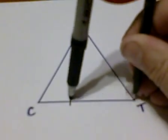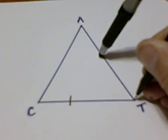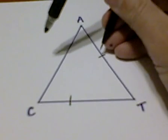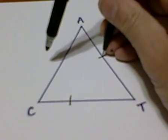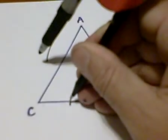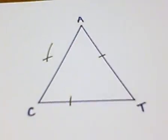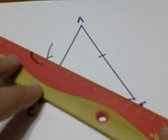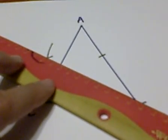So I'm going to bisect angle T and angle C. To do this first, we mark two arcs through side TA and side TC. And from each of those intersections, we're going to strike another arc so that we can make our angle bisector.